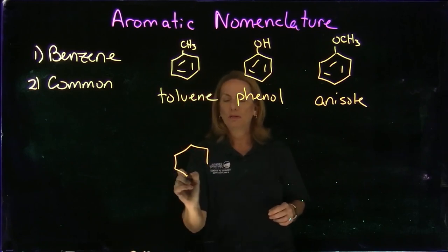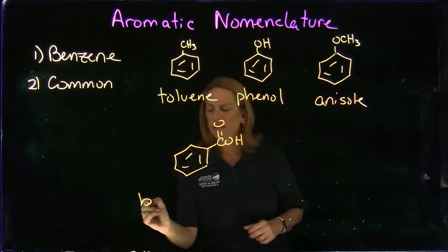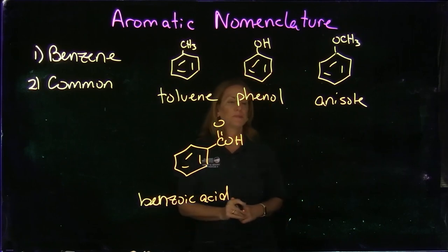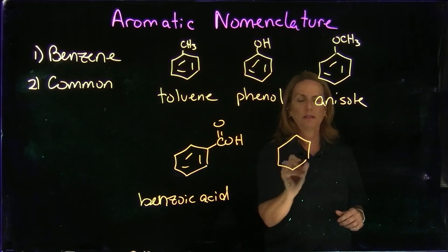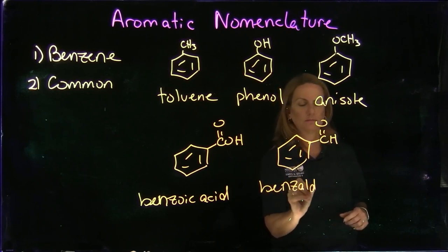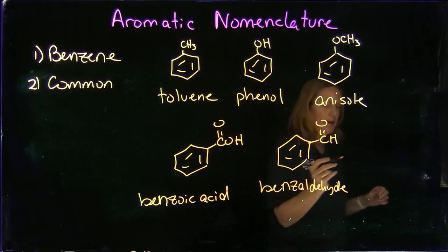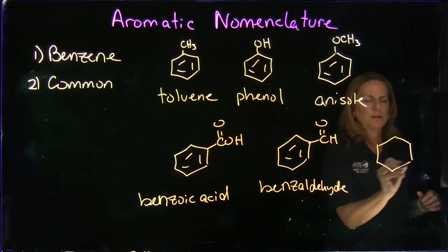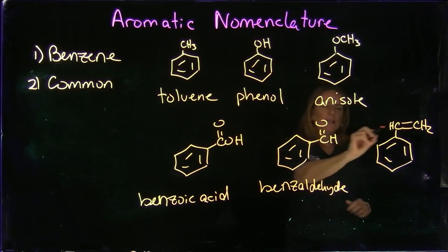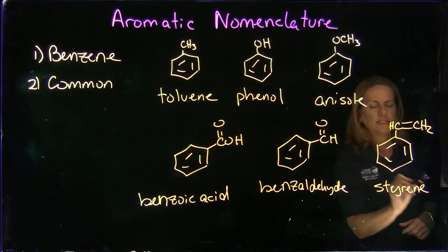If we have a carboxyl group, this is benzoic acid. We also have the aldehyde version — one less oxygen — which is benzaldehyde. And finally, if we have a vinyl group attached to the benzene, which continues the resonance, that compound is called styrene. These are common names you simply have to know.